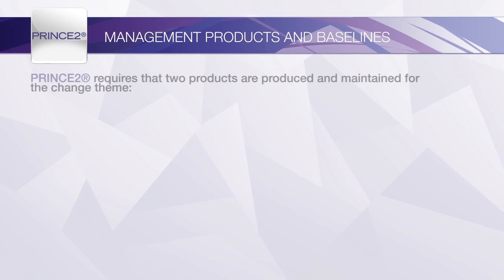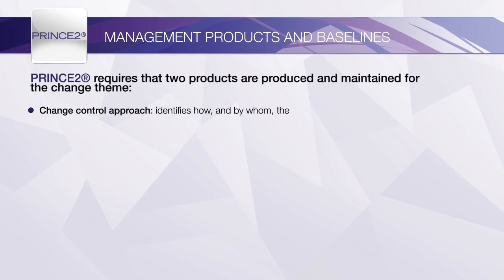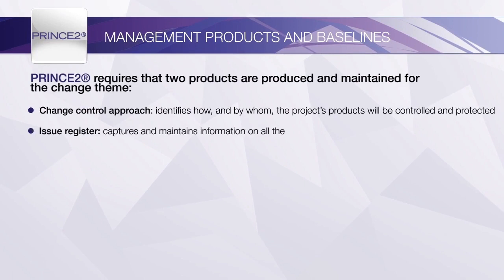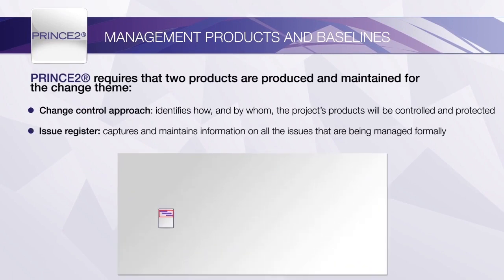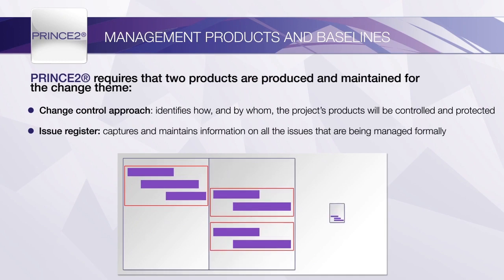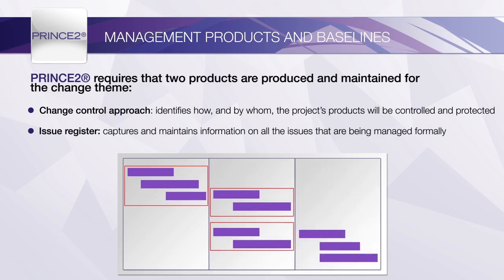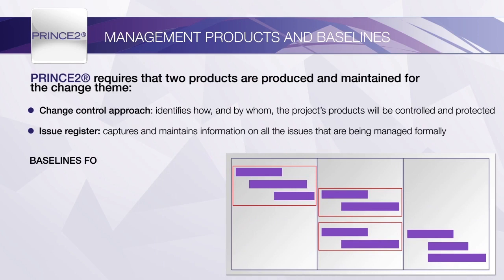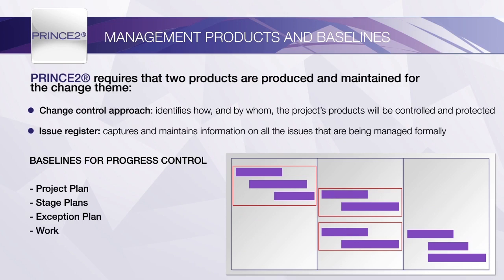There are two management products required to support the Change Theme: the Change Control approach and the Issue Register. PRINCE2 divides its management products into baselines, records and reports. Formal Change Control is required for all baseline management products, for example, the PID, plans, work packages, approaches and product descriptions.